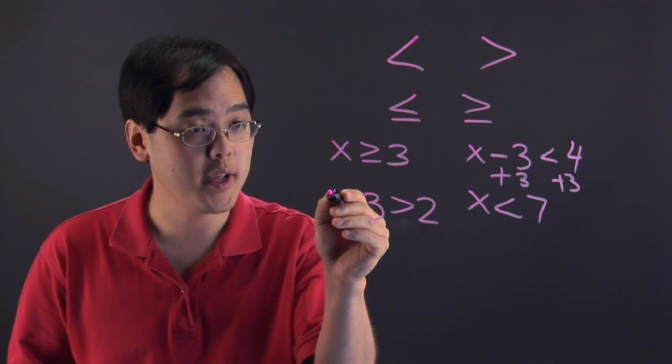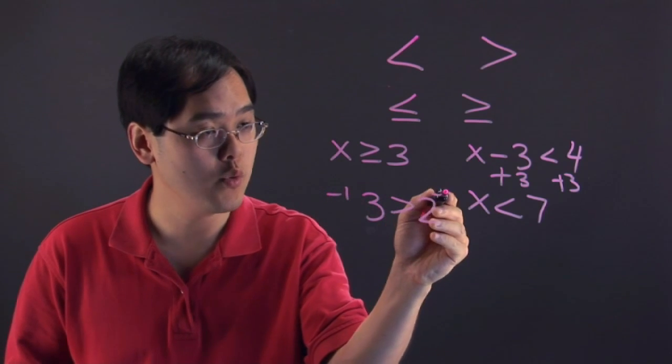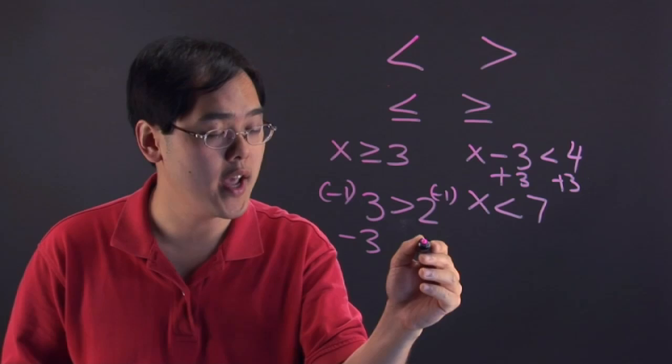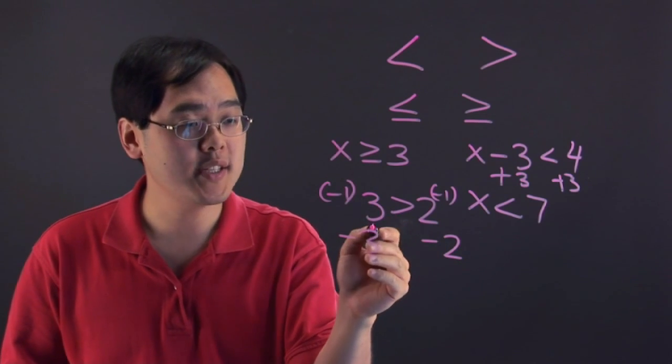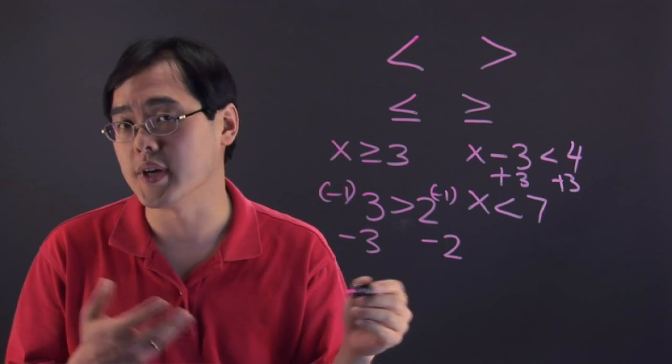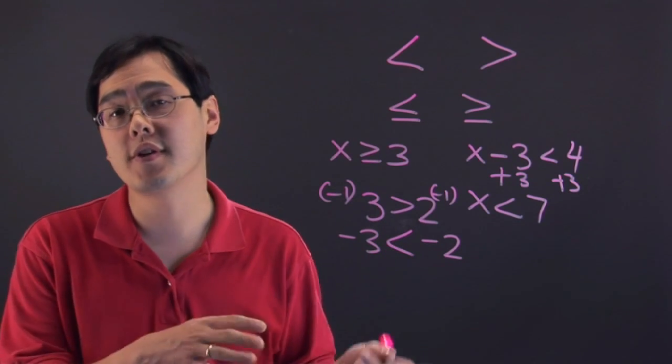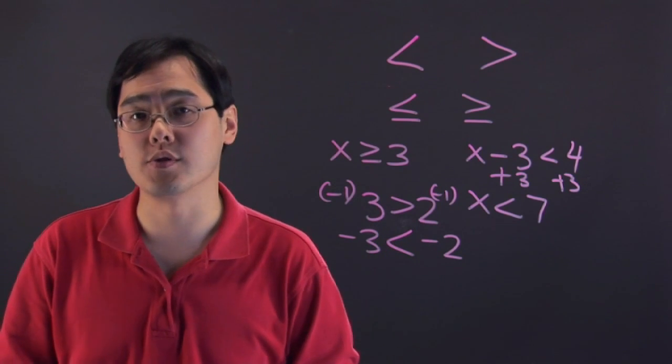For example, if you multiply both sides by negative 1, you have negative 3 and negative 2. But you can't say negative 3 is greater than negative 2 because that makes no sense. You do have to switch the sign. So that's really the one fundamental rule you have to think about when it comes to solving inequalities.